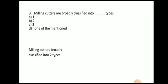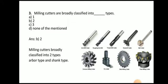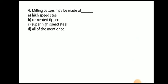Next question: milling cutters are broadly classified into how many types — one, two, three, or none of the mention. The answer is two. Milling cutters are broadly classified into two types: arbor type and shank type. Here you can see the shank type of milling cutter, where the shank is the holding portion. The arbor-type cutters are mounted on the arbor, whereas shank-type cutters have their own shank.